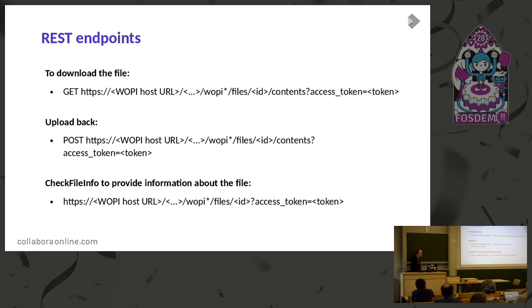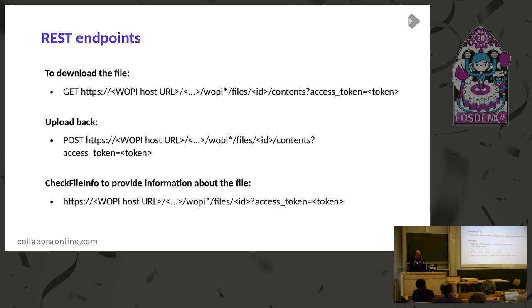The next step when implementing your integration is to implement only three REST endpoints: one for downloading the file, one for uploading the file, and a third one called check file info, which provides information about the file such as the file name and file size. Some parts are mandated, but there are also many extensions. This is really useful — we can put a lot of information into the check file info.